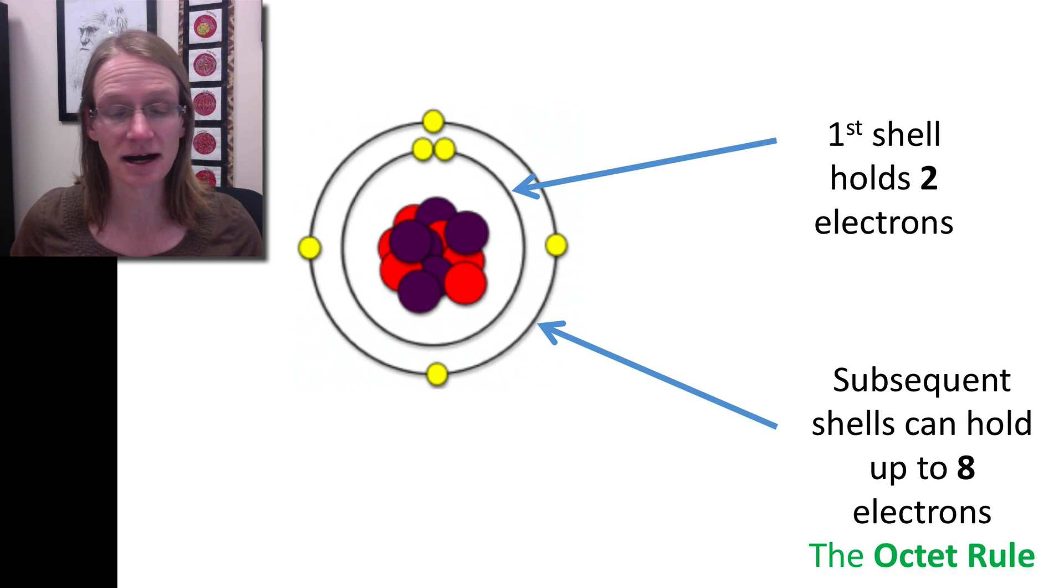This is often referred to as the octet rule. If you know a little bit about chemistry, you know there are some exceptions and some squirrely things that go on, but these are two good rules of thumb when we're talking about biological molecules and the atoms that comprise them.